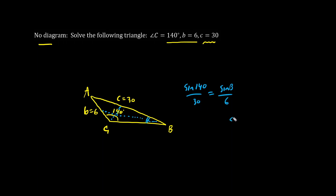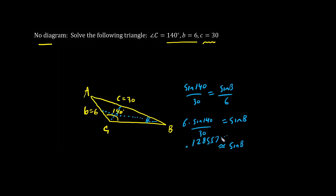We multiply both sides by 6, so we have sine B equals 6 times sine 140 over 30. Thus, sine B is approximately 0.128557. We hit sine inverse, and we get B is approximately 7.39 degrees, and visually this looks correct.